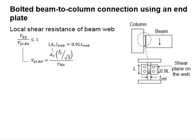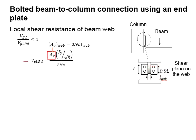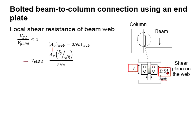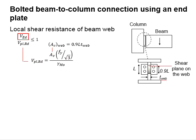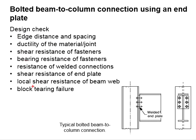Since the weld is only applied at both sides of the web, we cannot use the full plate height as the effective shear area height. Therefore, we omit 5% from each end of the total length, multiply by the thickness of the web, and treat that as the effective area for the local shear resistance of the beam web. Substitute the values into the equation to get the plastic shear resistance of the web, which is checked against the shear load acting on the connection.